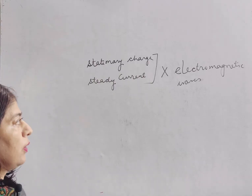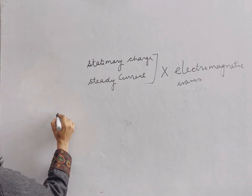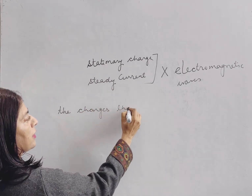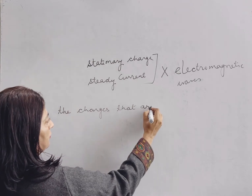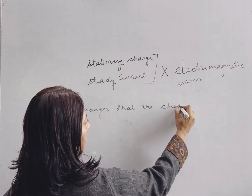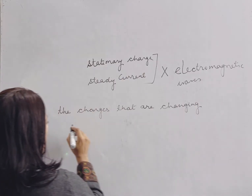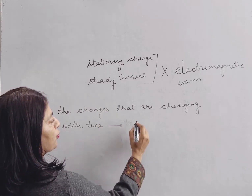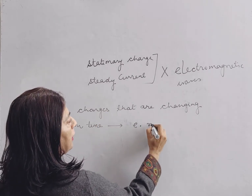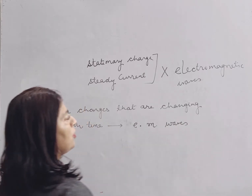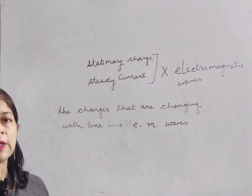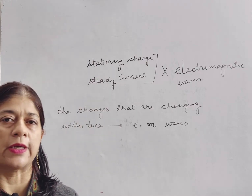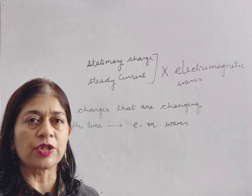Experimentally, it is seen that only the charges that are changing with time are going to produce electromagnetic waves. So, what is the key point here? The fundamental phenomenon behind the production of electromagnetic waves is the acceleration of charged particles.